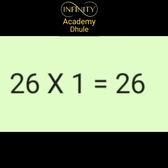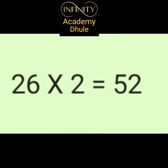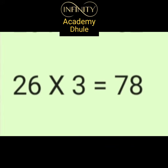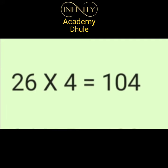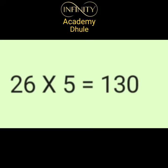26 ones are 26. 26 twos are 52. 26 threes are 78. 26 fours are 104. 26 fives are 130.